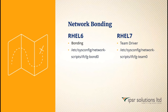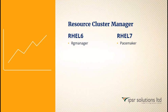Network bonding. Network bonding uses a team driver in RHEL7, called teamd, stored in /etc/sysconfig/network-scripts/ifcfg-team0. In RHEL6 it was called bonding. For the cluster manager, RHEL6 used rgmanager, whereas RHEL7 uses Pacemaker.